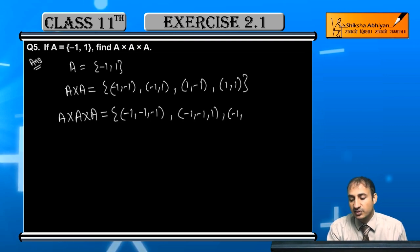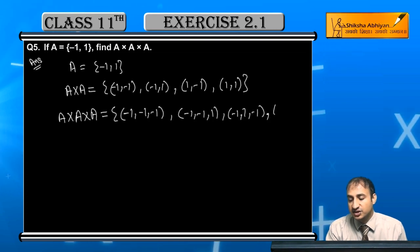Then after this minus 1 1 1. Now 1 ka in 4 elements ke saath me, it will be 1 comma minus 1 minus 1.